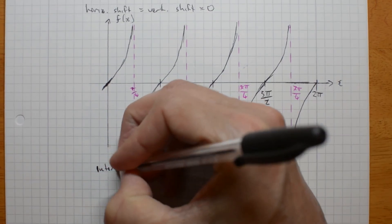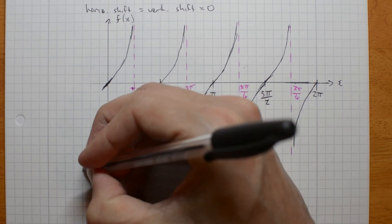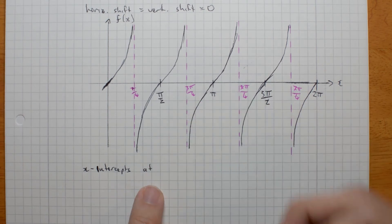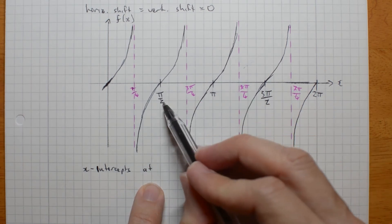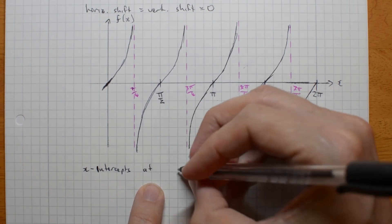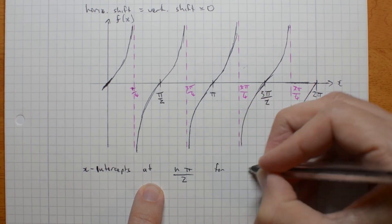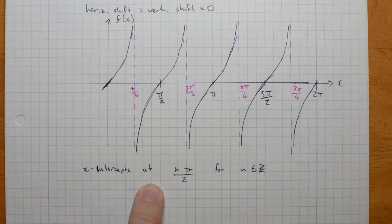So, intercepts... Sorry, x-intercepts are at multiples of pi on 2. n pi on 2 for integers n.